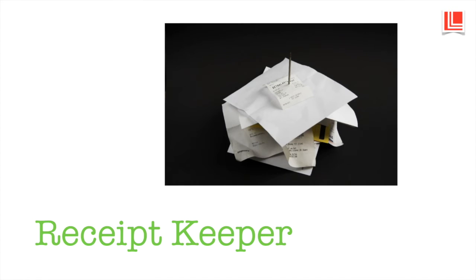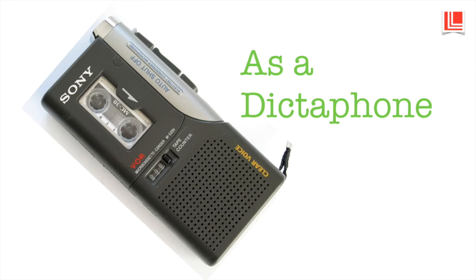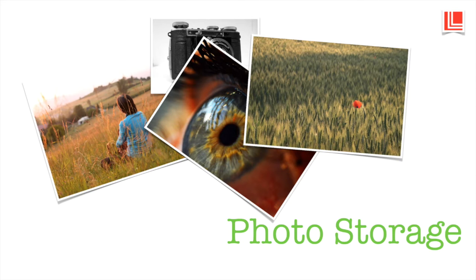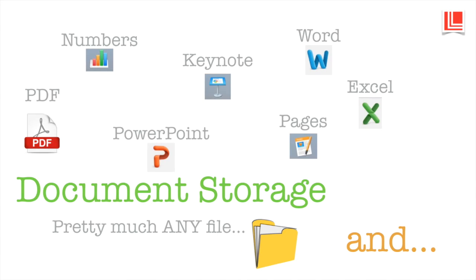I also keep a lot of my receipts so I can see exactly what I've got and don't need to keep piles of them in bags and drawers ready for each tax year. Your business card, it's a dictaphone, and I can also write freehand in it. It even has a function in the premium version where it can start to read your own handwriting. There's a photo storage option, very useful if you want to put a lot of pictures into folders and store them safely. You can also store Word, Keynote, PowerPoints, PDFs — pretty much any file — and retrieve those files on any device.